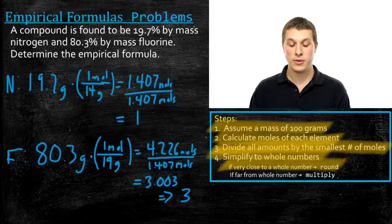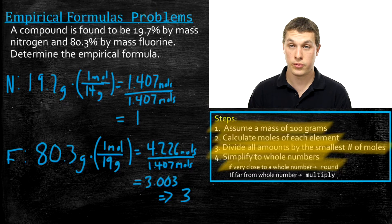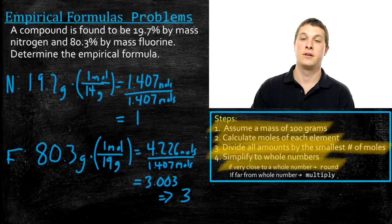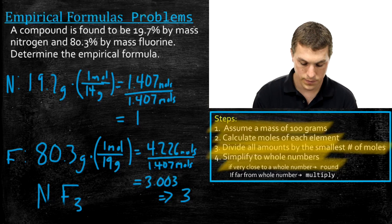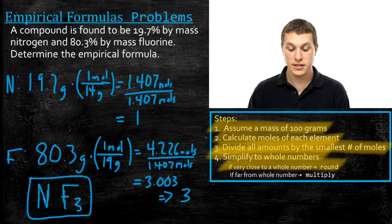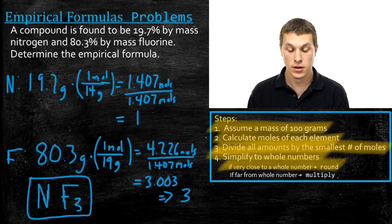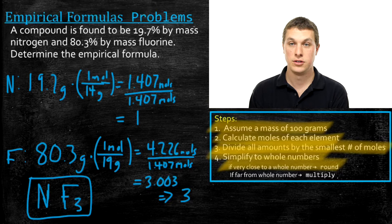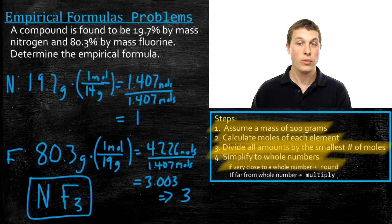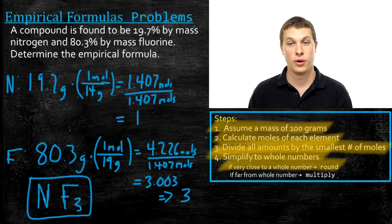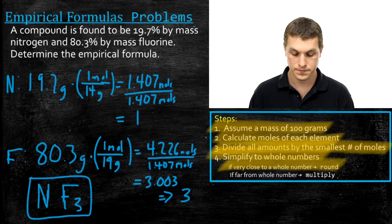We round 3.003 to 3 because elements can only combine in whole number ratios — the 0.003 is likely due to a slight measurement error in the experiment. This tells us we have one nitrogen for every three fluorines, giving us the empirical formula NF3, or nitrogen trifluoride. To summarize: we used percent mass to find how many moles of each element we'd expect, then compared the ratio of nitrogen to fluorine atoms. Our empirical formula is NF3, but we still don't know the exact molecular formula.